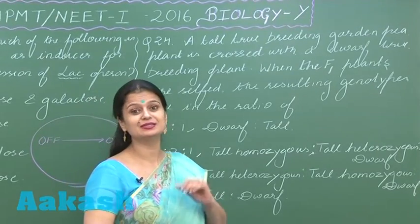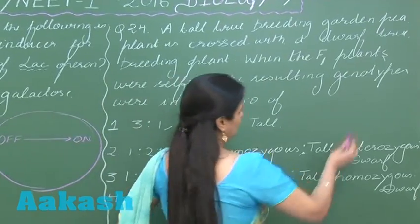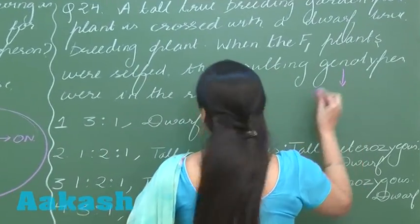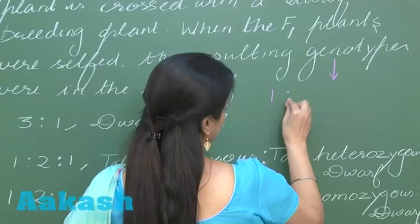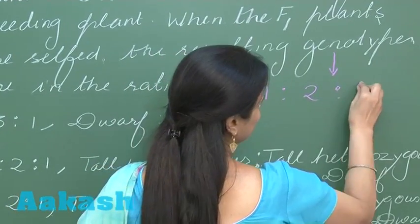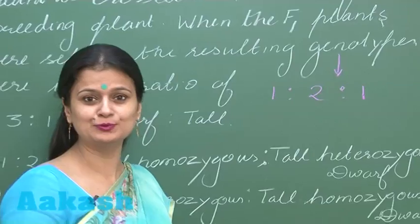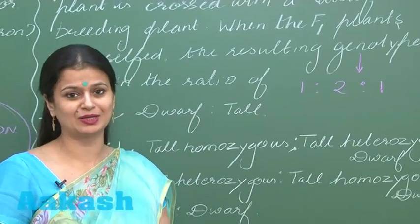So we have to look for the genotypic ratio. Yes, that is 1:2:1. This is the genotypic ratio. Don't confuse it with the 3:1 ratio—that is the phenotypic one.